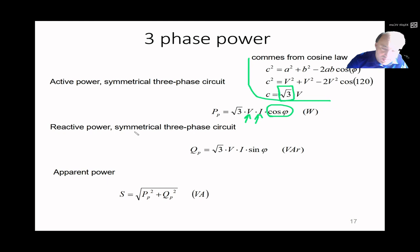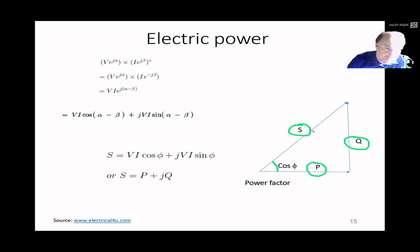For three-phase reactive power: Q = sqrt(3) * V_rms * I_rms * sin(phi). For a resistive load, phi = 0, so reactive power is zero. Apparent power is again the geometric sum of active and reactive power, forming the same power triangle. These formulas apply to both single-phase and three-phase systems, with the additional sqrt(3) factor for three-phase.